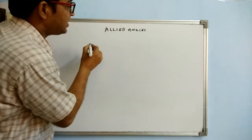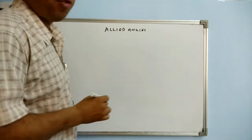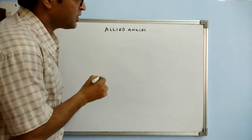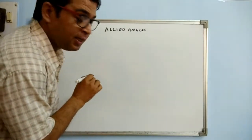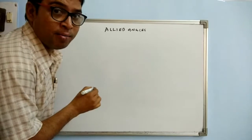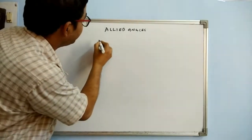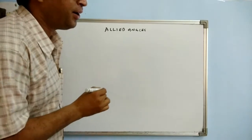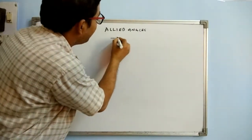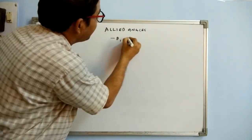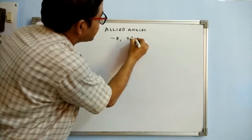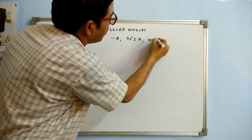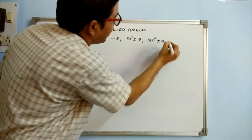Two angles are said to be allied angles if their sum or difference is either zero or a multiple of 90 degrees. We will be seeing different trigonometrical ratio values for minus theta, 90 degree plus/minus theta, 180 degree plus/minus theta, and so on.